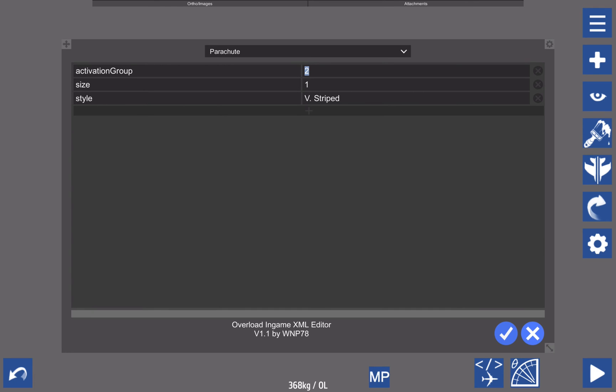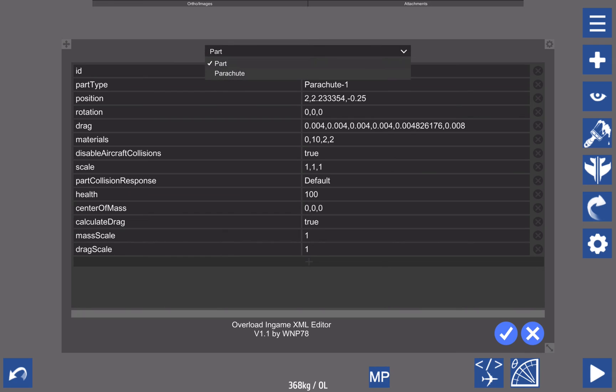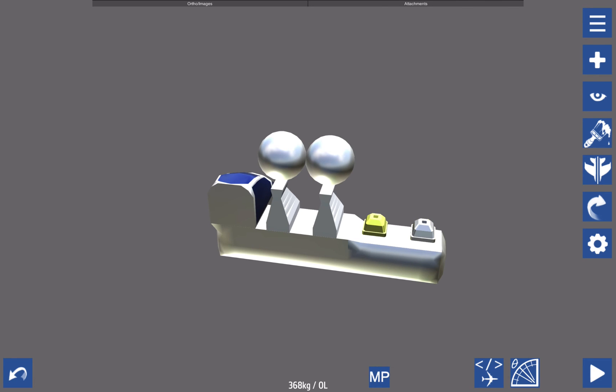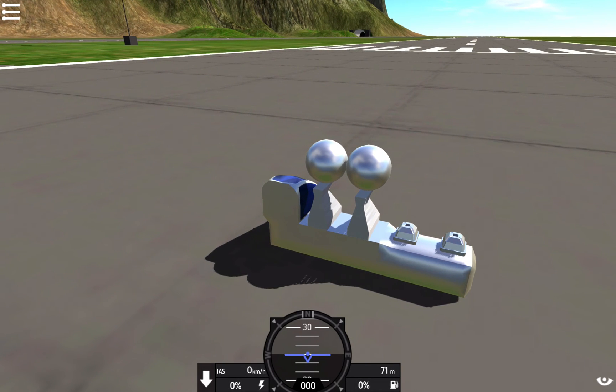This second one is on activation group two. It's on the parachute to demonstrate some of the more practical applications of this activation delay script. We should see that this particular parachute goes off immediately in activation group two, but this parachute has been given a delay of three seconds, so we should see it go off three seconds after this first parachute. Let's see everything in action.